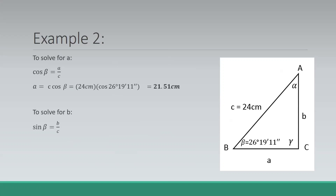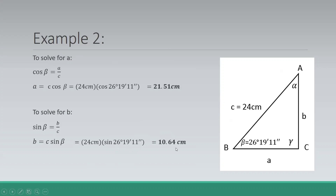For side B, we use the sine function, which is equal to B over C — the side opposite the given angle over the hypotenuse. Cross-multiplying, side B equals C times sine beta, so that is 24 centimeters times sine 26 degrees 19 minutes and 11 seconds, giving us 10.64 centimeters. Alternatively, you can use the Pythagorean theorem with the hypotenuse and the other leg, and you will also arrive at 10.64 centimeters.